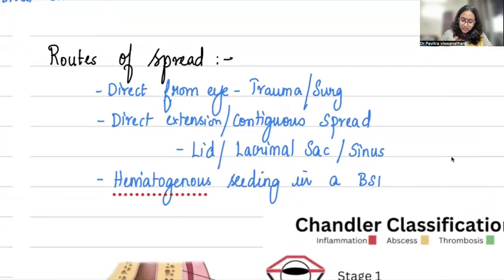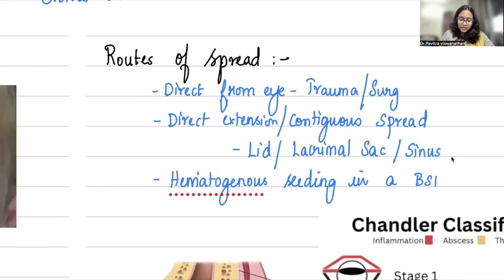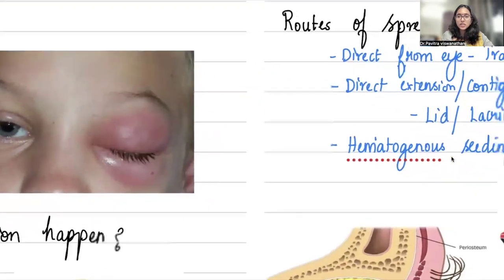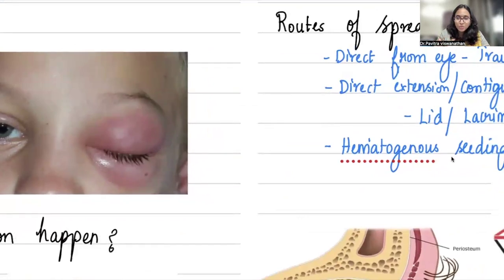Routes of spread: usually it's from the sinus—direct extension or contiguous spread. It can be an infection in the eye from trauma or surgery extending deeper, or hematogenous spread from bloodstream infection seeding in the eye. The history you ask correlates directly: has there been trauma, foreign body in the eye, recent surgery, or cough and cold recently? Any eye discharge treated incompletely, or has the child been generally unwell? These things tell you the possible source.